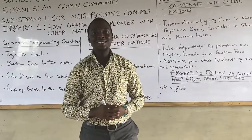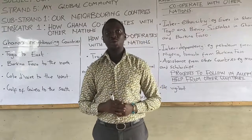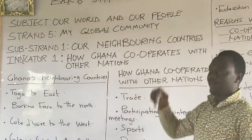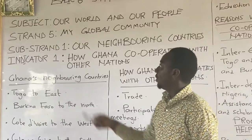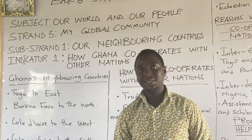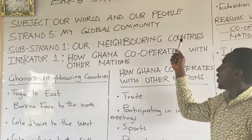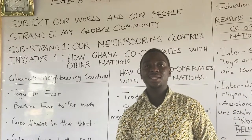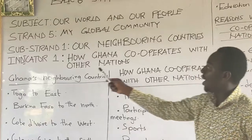Hello and welcome to Little Smarts International School Basic 6 Online Tutorial. Our subject for today is 'Our World and Our People.' The strand is Strand 5: My Global Community. The substrand is Substrand 1: Our Neighboring Countries. And the indicator is Indicator 1: How Ghana cooperates with other nations.